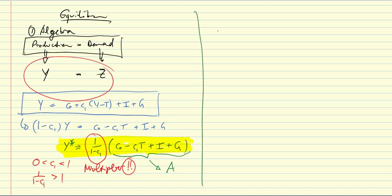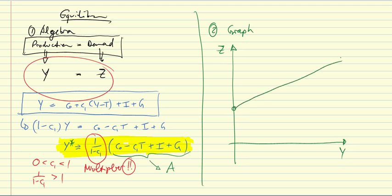Now, how does that look in a graph? How can we show the equilibrium condition in a graph? Well, we have a graph. We have a graph of the aggregate demand function, which looks a bit like this. Which has here a slope of C1 and here autonomous expenditures.